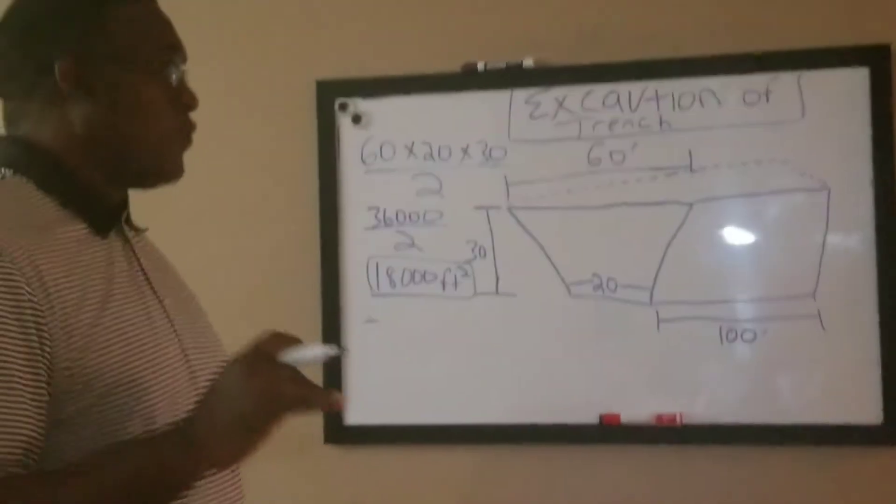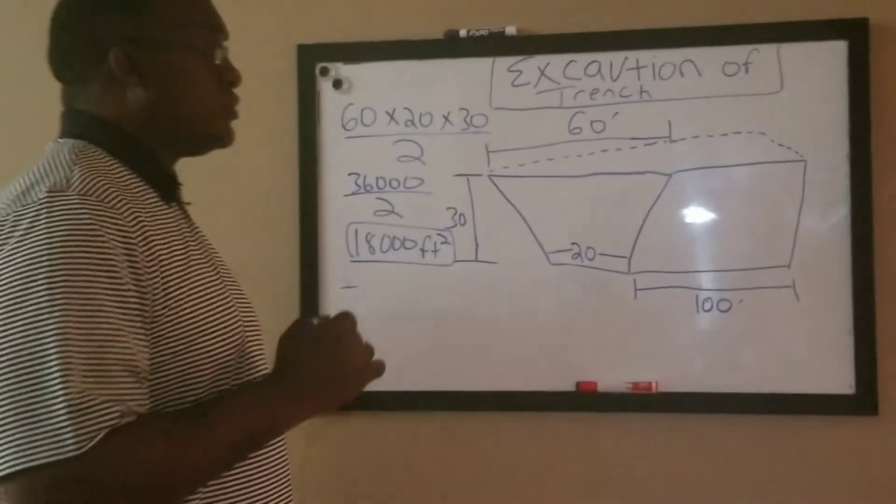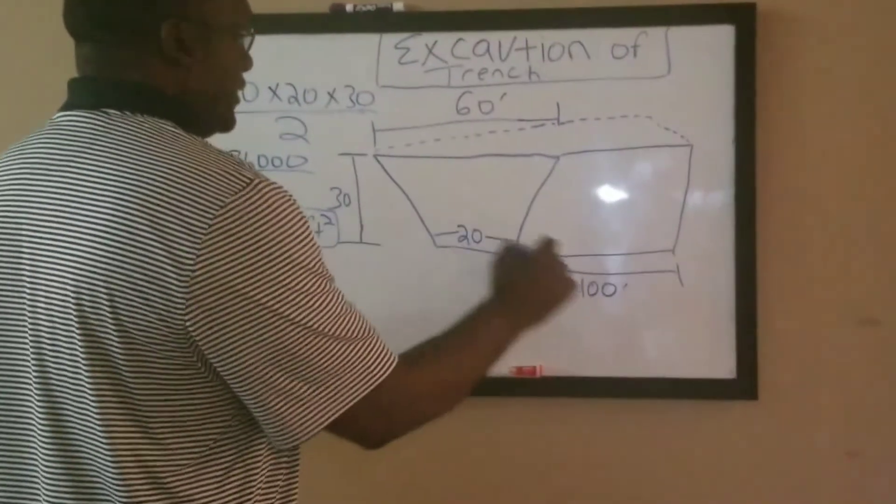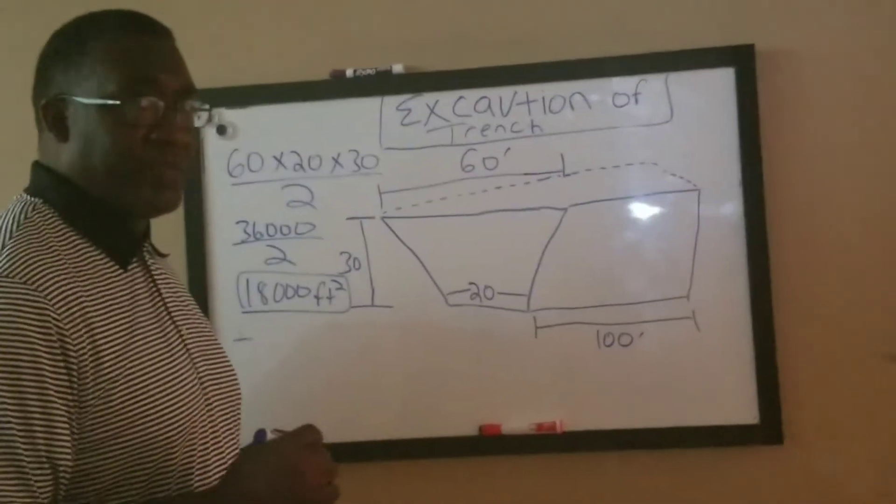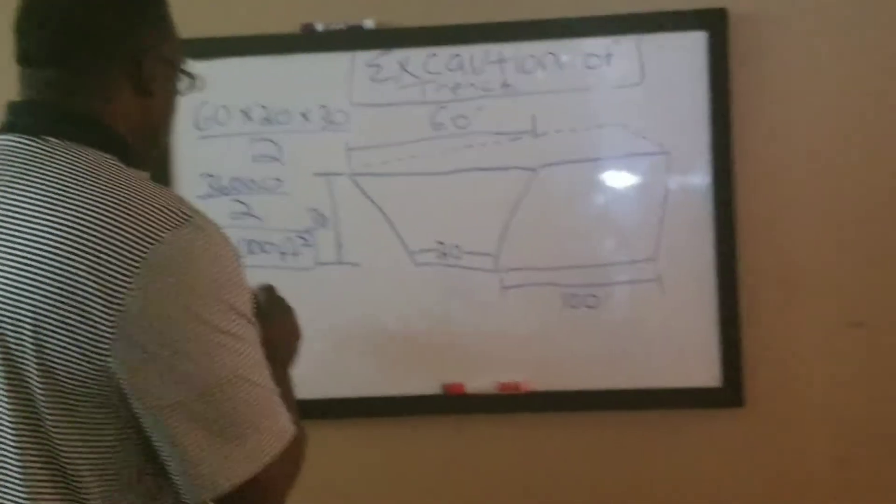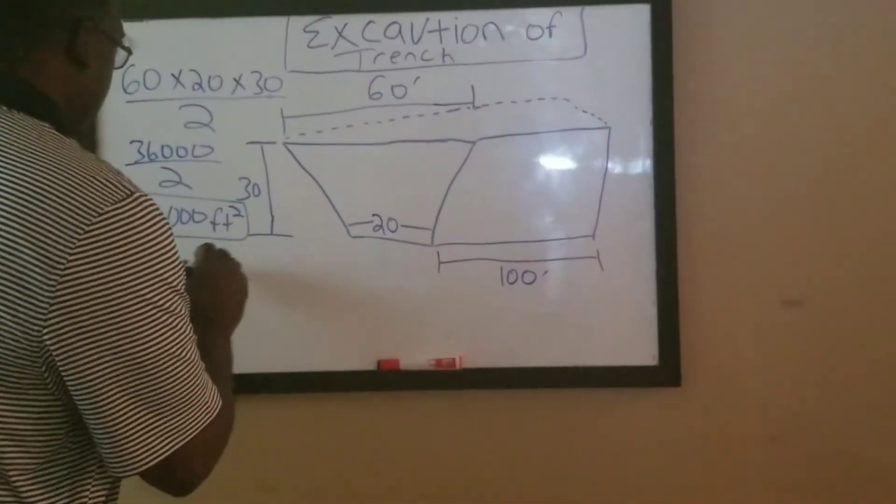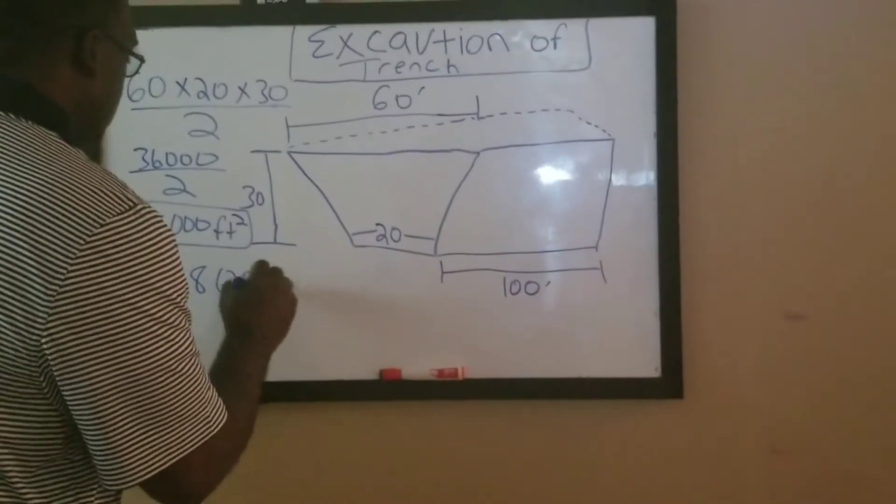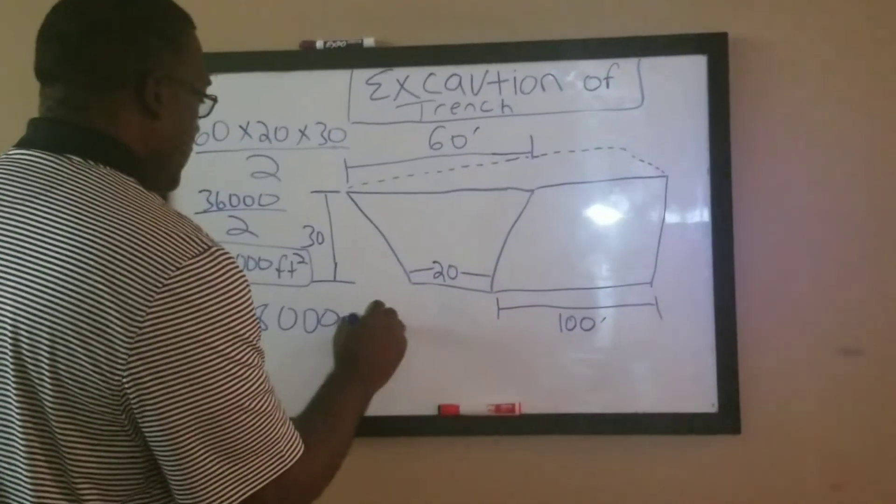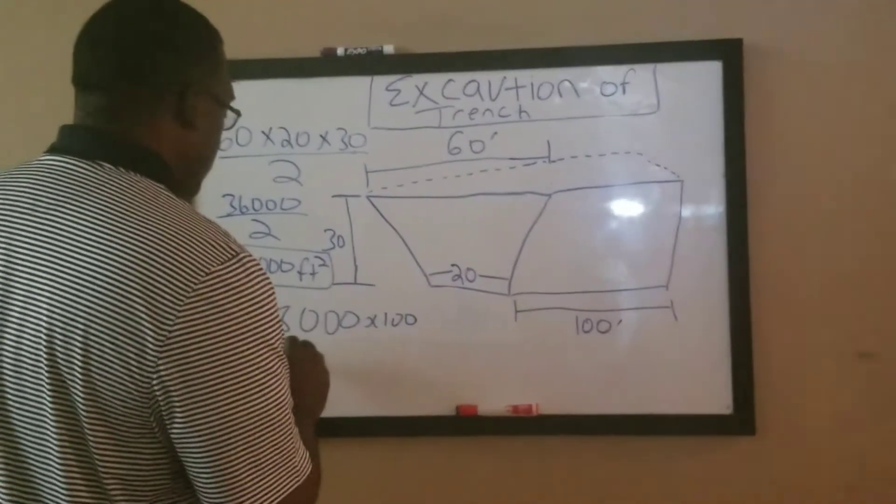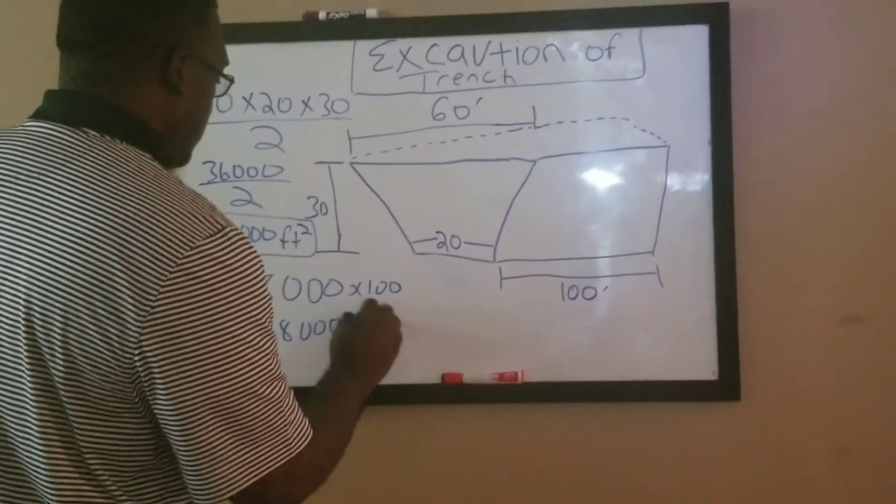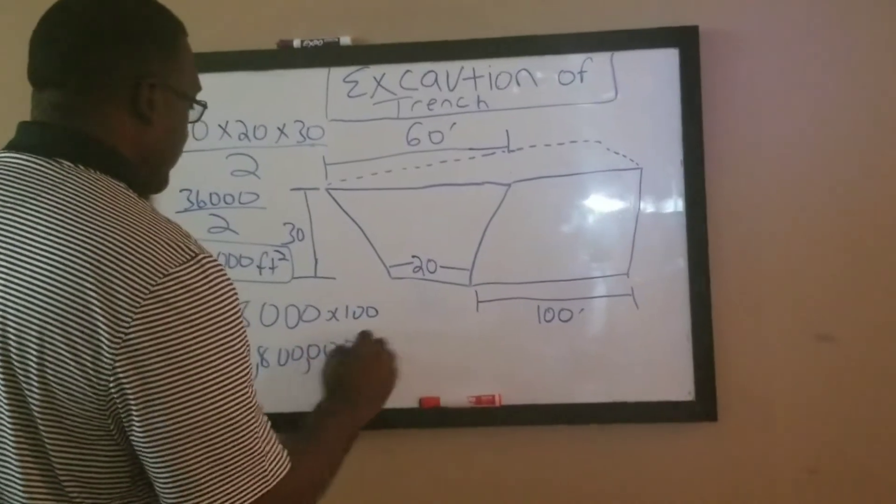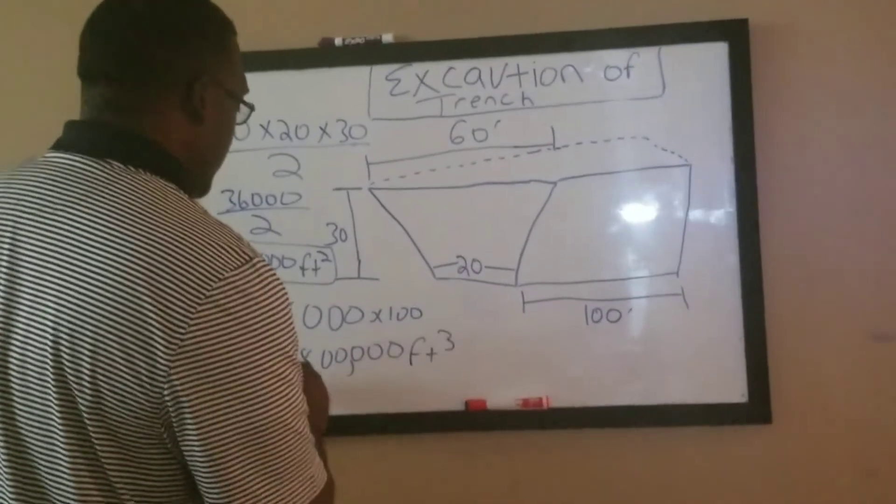To calculate the overall volume, you're going to multiply the area times the total length. And so that'll give you the volume of dirt that you have to excavate. So once you do that, you get 18,000 times 100, and that gives you 1.8 million cubic feet.